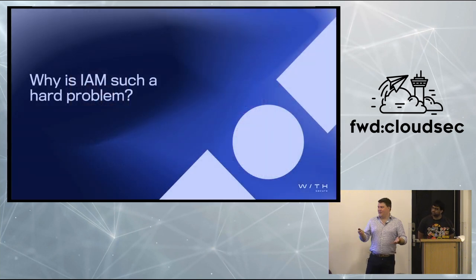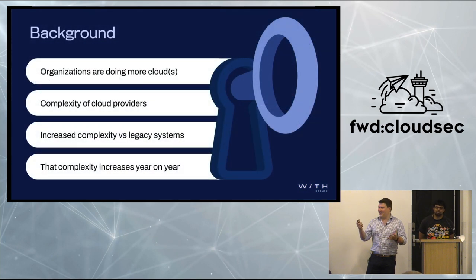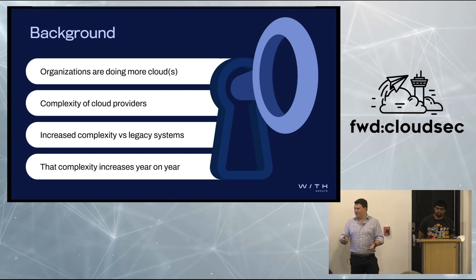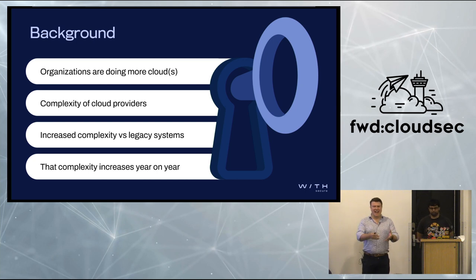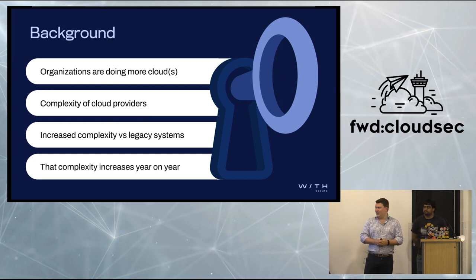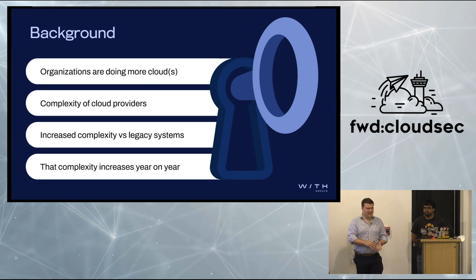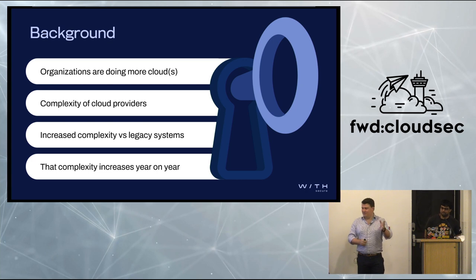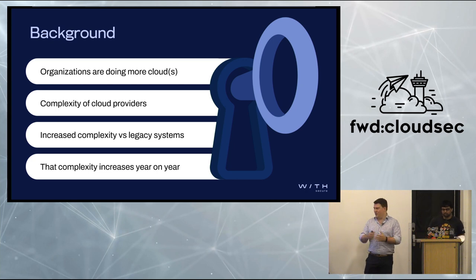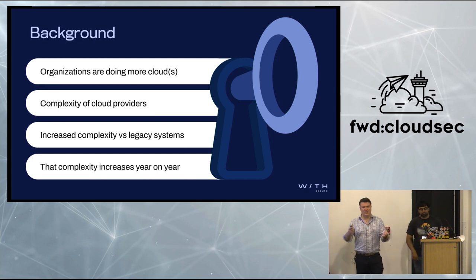So why is IAM such a hard problem? Organizations are doing more and more cloud — I think that's probably not a surprise to anyone either. What we found over the last five years with a lot of our consulting clients is they've gone from being an AWS house or an Azure house to suddenly running three, maybe even four different providers. It gets really interesting when you start dealing with organizations that operate in China in particular, because AWS China is sufficiently far behind mainstream AWS. Dealing with one identity and access management system is bad enough. When you're dealing with three or four, it gets really bad, and the systems get worse over time as more and more features and services are brought into the mix.